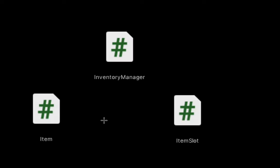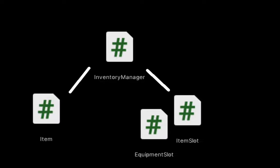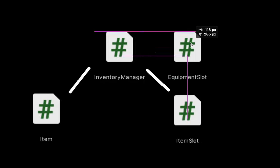Up until this time we've kept a pretty simple structure where you collect an item, it passes the information to your inventory manager which then sends the item to the correct item slot. The data is stored there, and if you drop an item we send the information in reverse back up to the manager and then down to a new item that gets respawned on the map. Now that we've added equipment, we're going to be adding a new piece to this puzzle: the equipment slot.